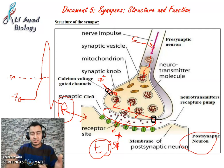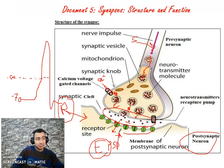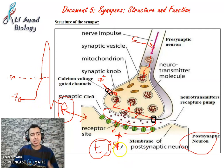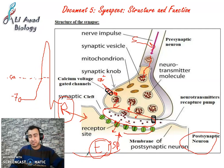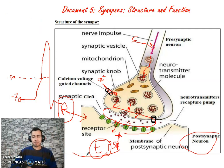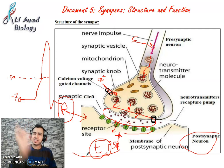Consequently, more Na+ channels open, more Na+ enters, yielding a higher EPSP and more action potentials. So the nervous message at the level of the synapse is coded by the concentration of neurotransmitters. If the concentration of neurotransmitters is higher, more action potentials are produced; if the concentration of neurotransmitters is low, the action potential output is low.